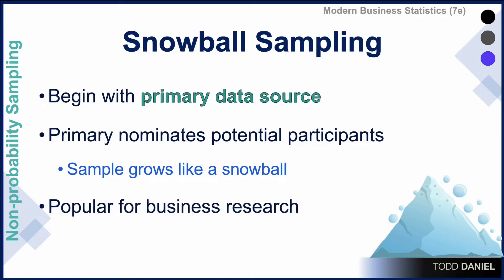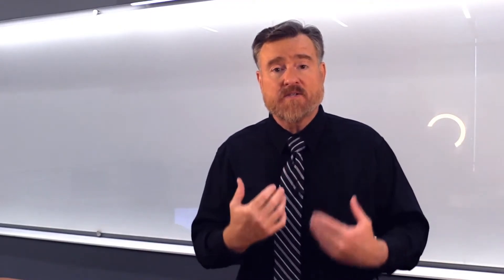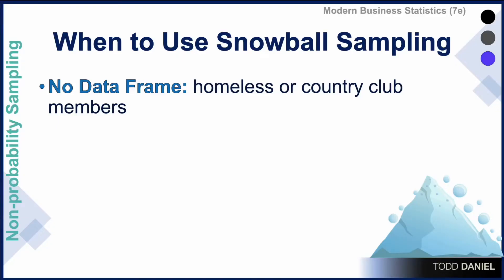This is a very popular technique for business researchers. You may start with a small group of people that you know and ask them to refer you to others whom they know. When should you use snowball sampling? The first circumstance would be when you do not have a data frame — for example, if you want to do research on homeless individuals or country club members. In both cases, you might not have access to all of those individuals, and so having one primary data source who could make those introductions might make this research possible.